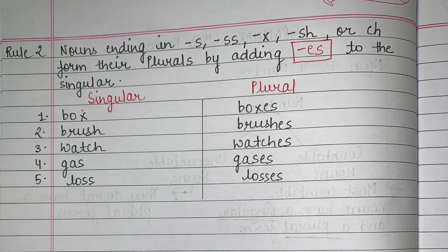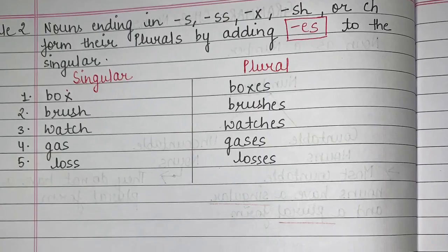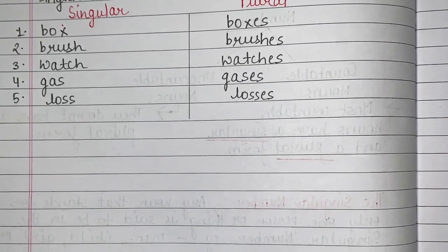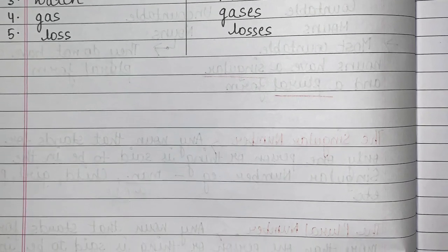Today in this video lesson we studied two rules. In the upcoming video we will study further rules. That's it for today's class — I hope you have understood. You will have one assignment in the description box, so make sure to check it and keep practicing these nouns. In the third week of July you will have your online exam — it is an objective, MCQ-type exam, so practice well and score good marks. All the best! I'll meet you all in the next video lesson. Goodbye, take care.